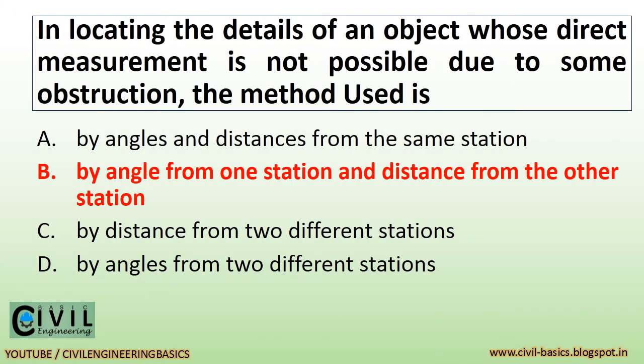In locating the details of an object whose direct measurement is not possible due to some obstruction, the method used is by angle from one station and distance from the other station.